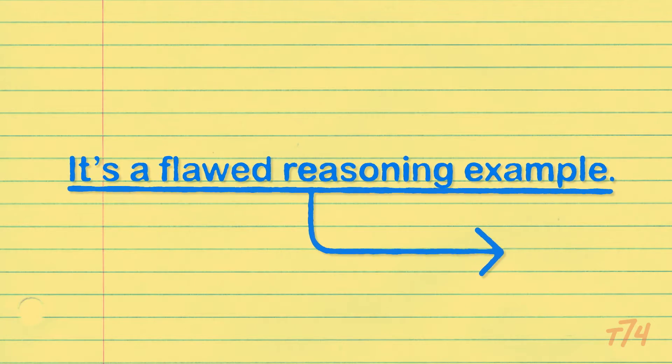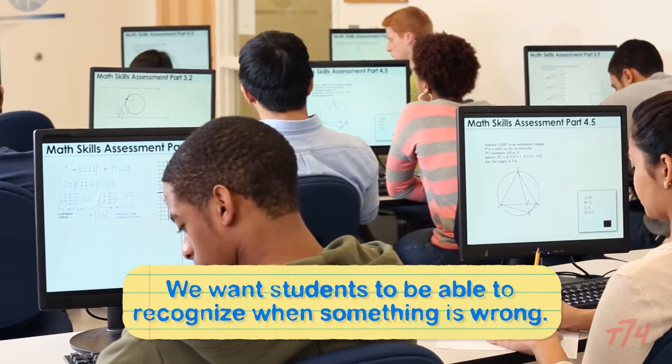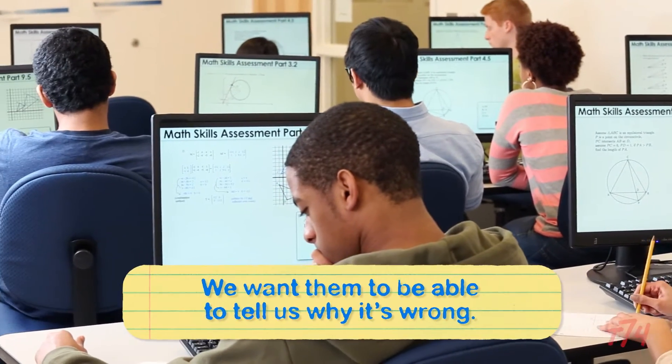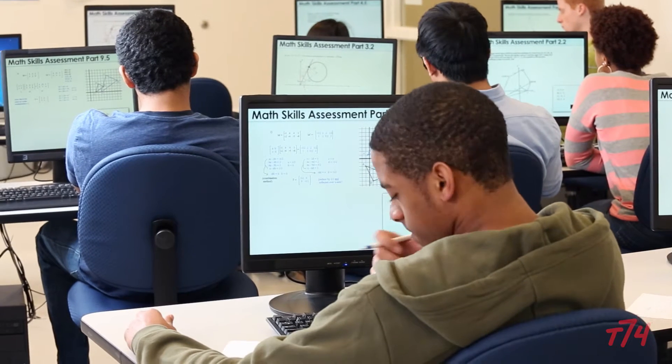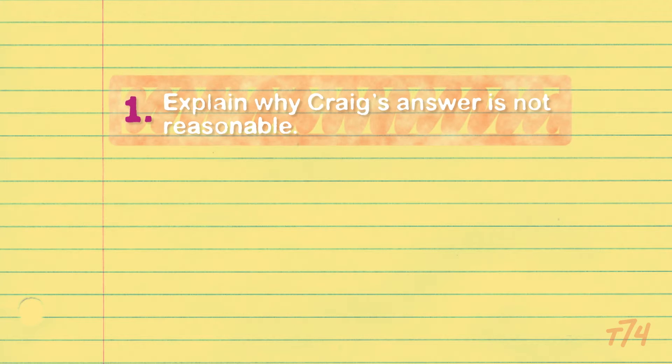So not only do we want students to be able to recognize when something's wrong, we want them to be able to tell us why it's wrong and then how you correct that. The test question is in three parts. The first is explain why Craig's answer is not reasonable.